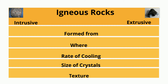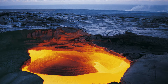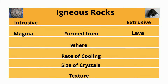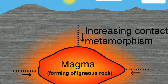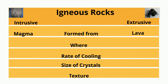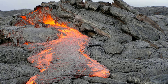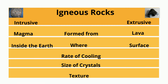Extrusive igneous rocks are created from lava — molten rock found on the surface. Intrusive rocks are created from magma, which is molten rock found inside the earth. Extrusive rocks are created on the surface where molten rock has flowed, while intrusive rocks are created inside the earth from hot magma.